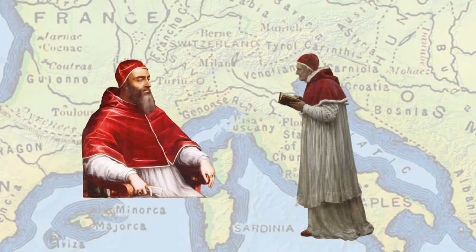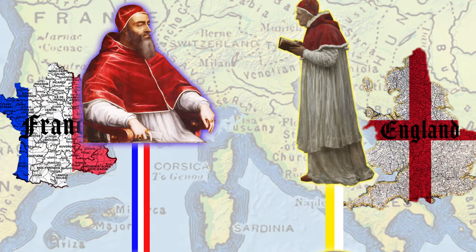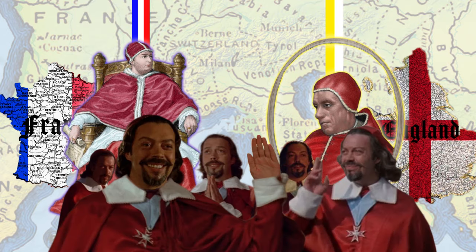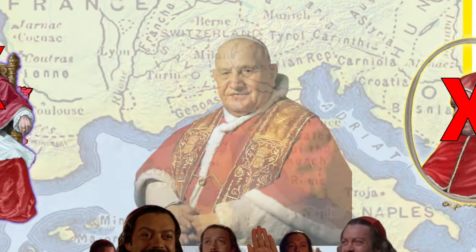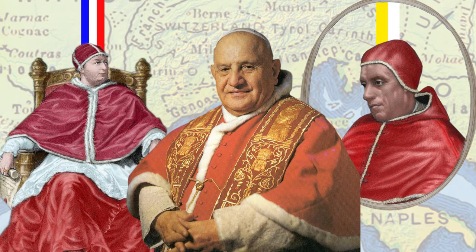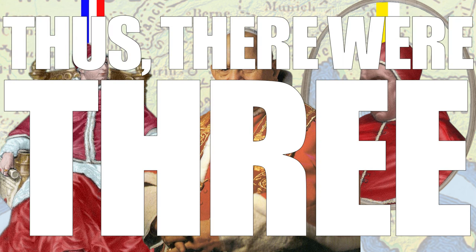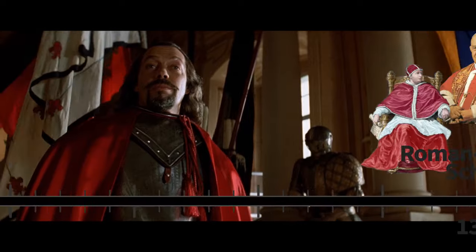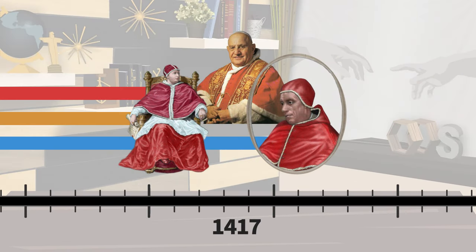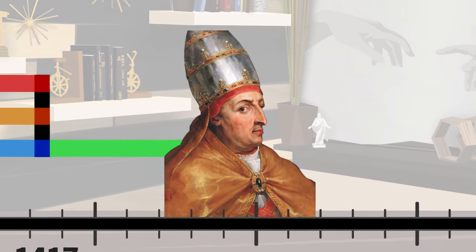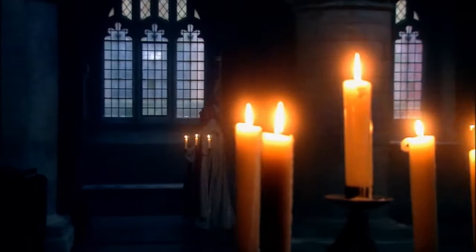So there were two popes at the same time, and different European countries supported the claims of different papal lines of succession. Eventually a council got together, deposed both of the then-current rival popes, and elected a new one. Of course, neither of those two popes recognized the election as legitimate, and thus there were three popes at the same time. The schism began in 1378 and finally ended in 1417 when all three popes were forced to resign and Martin V was elected as the one and only pope. But the western schism had irreparably damaged the reputation of the papacy and provided fertile soil for reformist ideas to flourish.